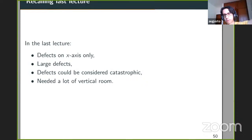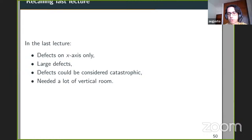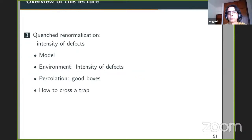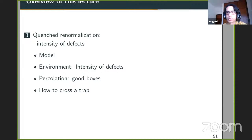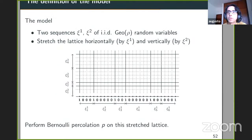In the last lecture we used a lot of vertical room — since the defects were large, we had to go up a lot, a stretched exponential height, to find the passage through the defect. Here we're in a situation where we really cannot allow ourselves to go more in the vertical direction than we go horizontally — we have to be balanced. The overview: we'll define the model, do the renormalization in two steps, one for the environment and one for the percolation on top of it.